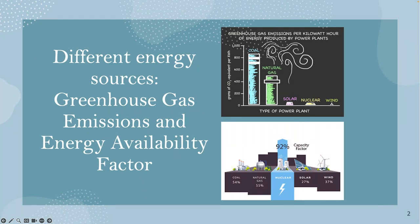I'm just showing here the different energy sources. As we would know, we've got coal, natural gas, solar, and other forms of energy sources — just to show the one which has the least emissions of greenhouse gas per kilowatt hour of energy produced. You can see in the slide that solar, nuclear, and wind form that group of technologies which provide the cleanest form of energy sources.